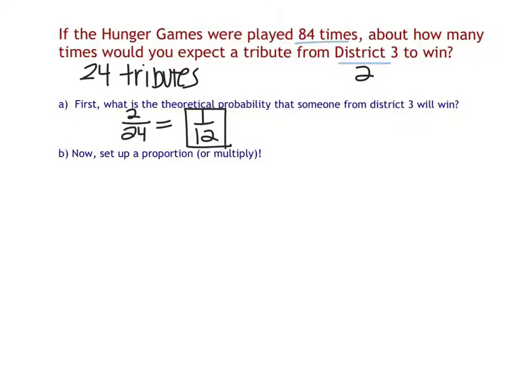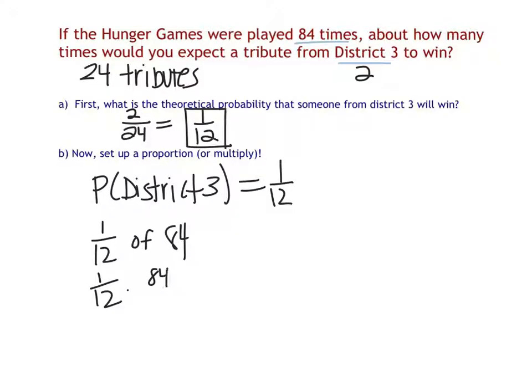Now we want to set up a proportion or multiply to figure out if they played it 84 times, how many times would we expect somebody from District 3 to win? If the probability of someone from District 3 is 1 12th and we want to do it 84 times, then I'm looking for 1 12th of 84 or 1 12th times 84. And so I can do 84 divided by 12 here. I have 84 over 12, which equals 7. So if I just multiply here, I can see that we would expect them to win 7 times.